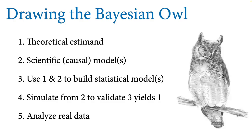Why am I talking about kids' books? In this course, I encourage you to follow this idea of drawing the Bayesian owl — there's this five-step plan to success, where we start with a clearly defined theoretical estimand, then sketch out causal models, make them into real generative models that can produce synthetic data, and use those to build statistical models through the logic of do-calculus or by expressing the generative model directly. Then we test: quality assurance is necessary. We use simulations from the generative model to validate the estimator, and only then are we ready to analyze the real data.